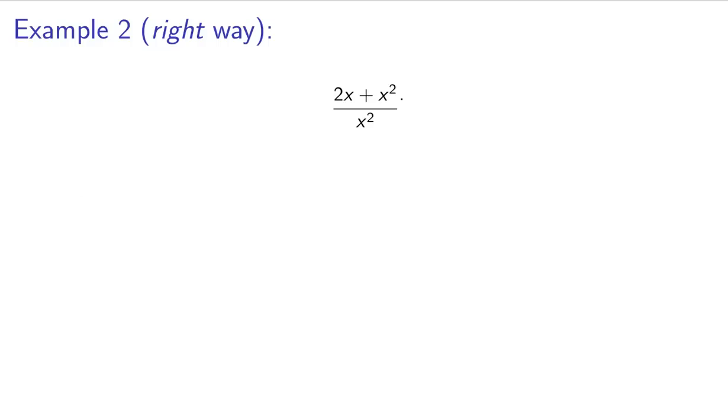So the first thing I want to do is factor this out as much as I can. And I have a common factor of x. So I have 2 plus x over x squared.